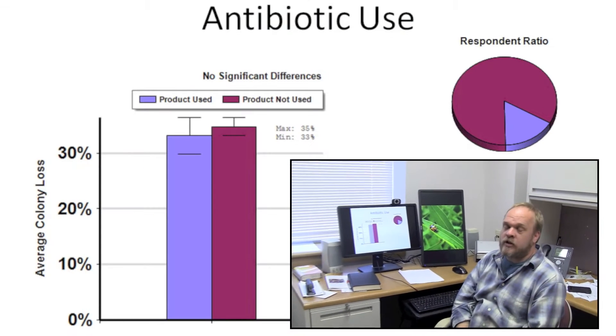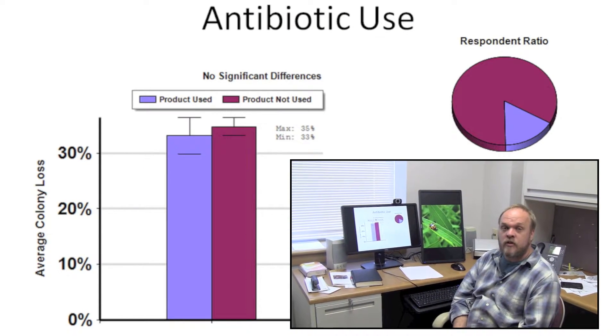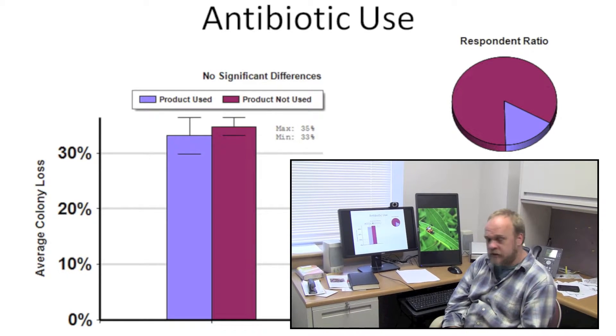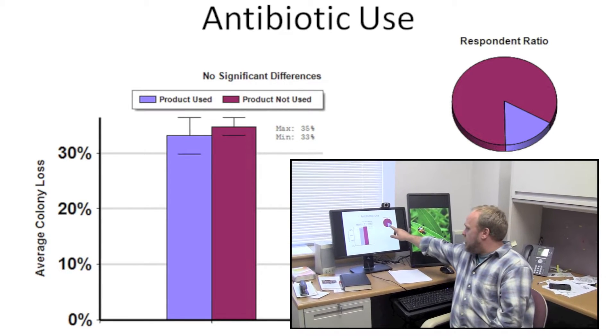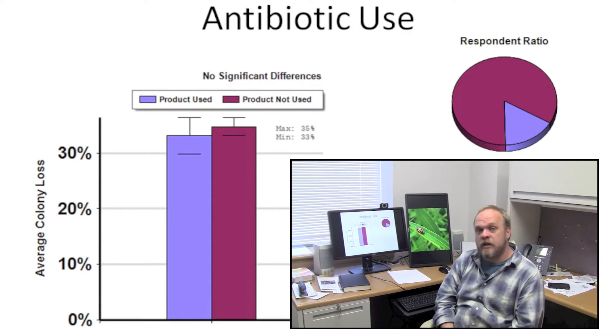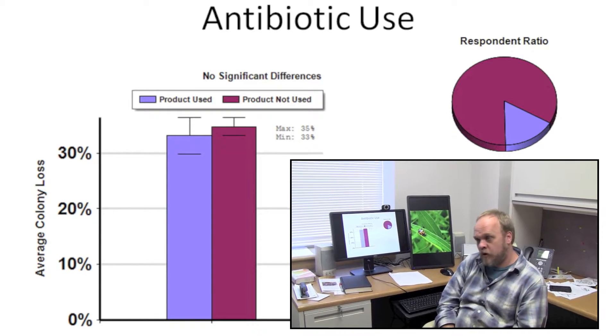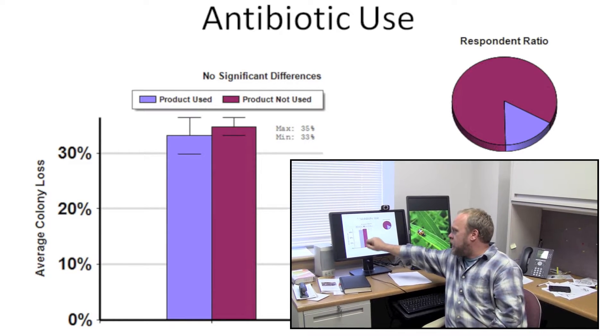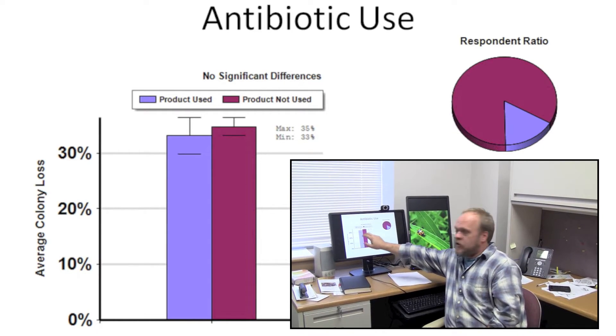By antibiotics use here, we mean strictly those antibiotics used for brood diseases, so Tylan and Terramycin. You can see about 20% of beekeepers used an antibiotic 12 months preceding the winter loss survey, but there was no difference in mortality between those who used it and did not use it.